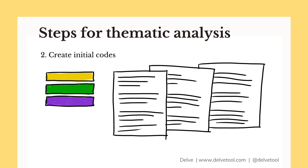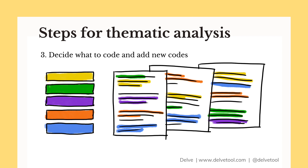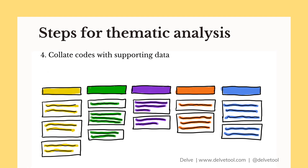Step two: create initial codes. Now that you're familiar with the data, create a set of initial codes that represent the meanings and patterns you see in the data. Then in step three, read through your data again, identify interesting excerpts, and apply the appropriate codes to them. Excerpts that represent the same meaning should have the same code applied. Add new codes as you see fit. Step four is when you collate codes with supporting excerpts — bring together all the excerpts associated with a particular code.